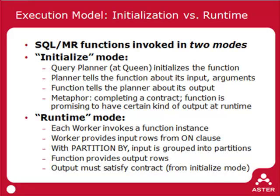In runtime mode, once the contract has been completed and the planner is aware of the function's output, each worker in Aster cluster will invoke a function instance. The worker provides input rows specified in the ON clause of the SQLMR function query. With a PARTITION BY clause, the input rows will be grouped into partitions, so the function processes an entire group as a whole rather than one row at a time. In both cases — row function or partition function — the function provides output rows, and that output must satisfy the contract agreed to during initialize mode.